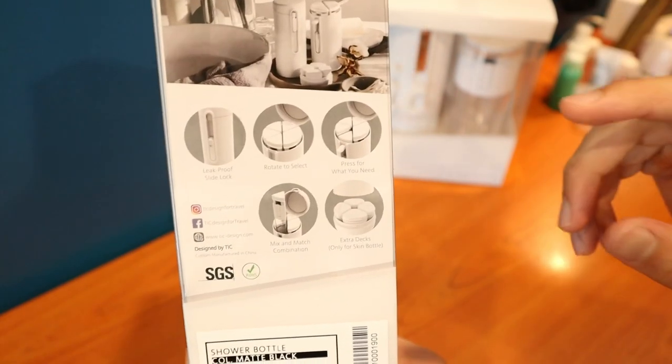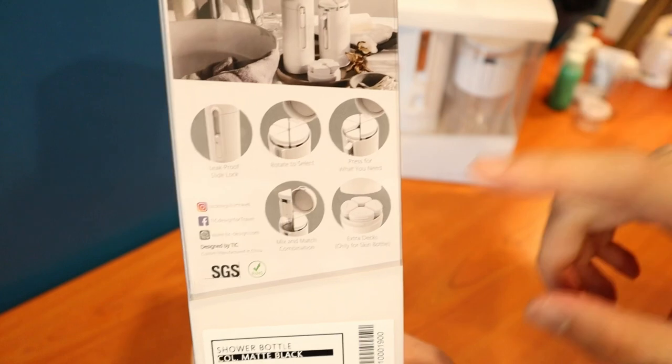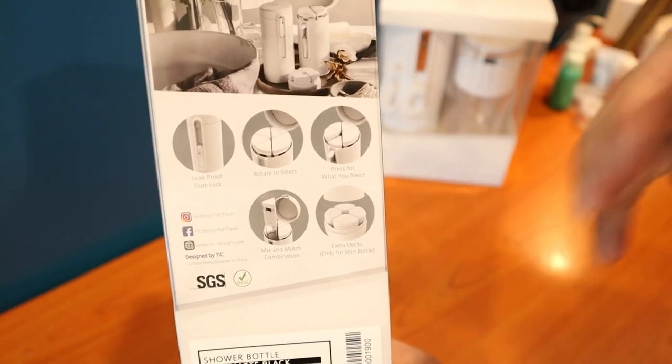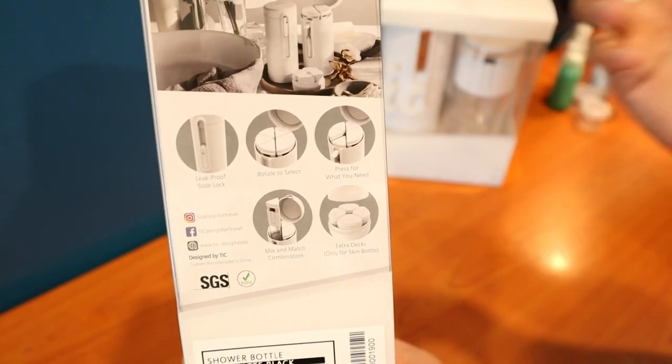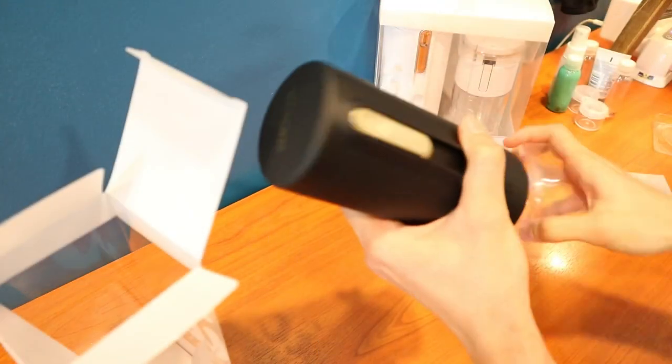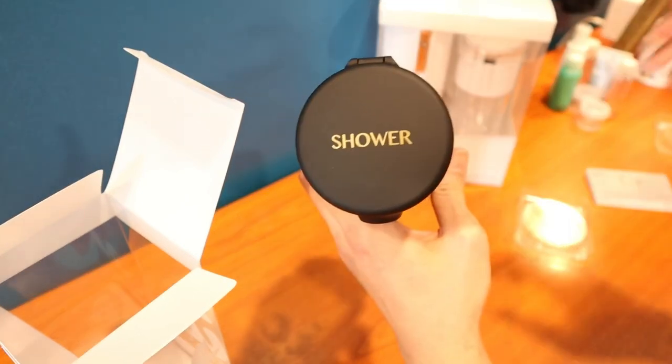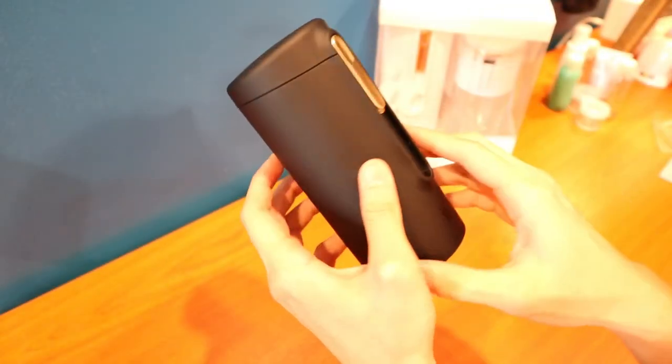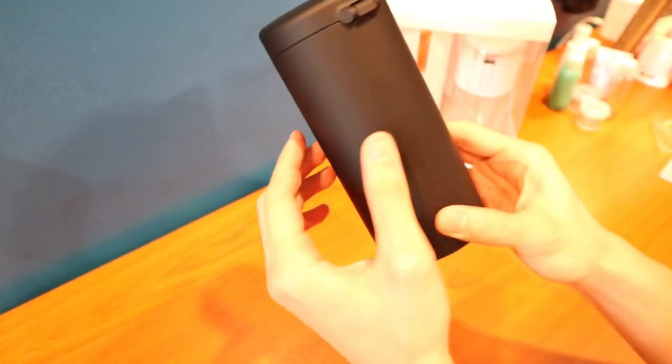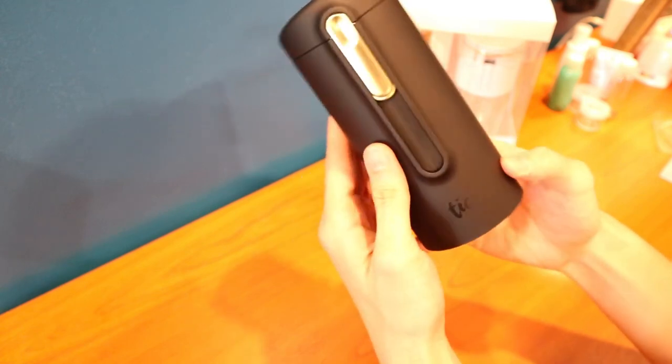So here's the extra feature that is only available on the skin models. There's another section at the bottom for you to keep more thicker gels like your eye cream. Let's open it. At the top, it says shower, which clearly indicates that it is the shower edition. Let's put some of the stuff aside. Wow. That is an amazing color combination. I just love this finish.